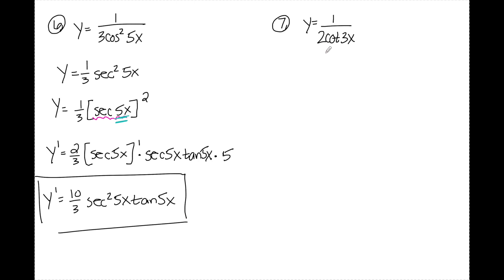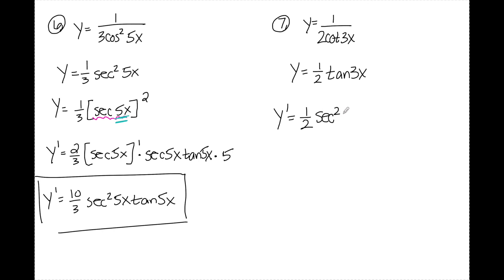Number 7 is similar to number 6 in that I don't want to use a quotient rule. I first pull out a coefficient of one half, and then 1 over cotangent of 3x equals tangent of 3x. Now I can just use a chain rule: y prime is 1 half; the derivative of tan is secant squared; I have 3x not plain x, so I multiply by the derivative of 3x, which is 3. Cleaning up gives 3 halves secant squared of 3x.